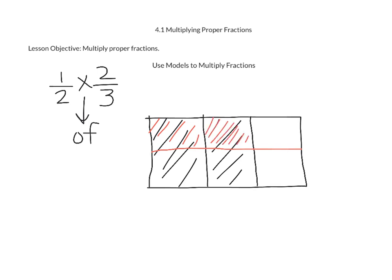Now when you are doing your shading, make sure that you don't go in the area where I just put the red X. Because we are finding one half of two thirds — if we were to shade where I put the red X, we would be finding one half of one.